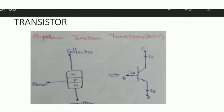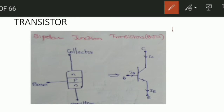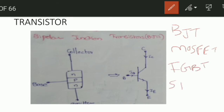Coming to power transistors, these are of four types. The first one is Bipolar Junction Transistors (BJT), the second one is Metal Oxide Semiconductor Field Effect Transistor (MOSFET), the third one is Insulated Gate Bipolar Transistor (IGBT), and the fourth one is Static Induction Transistors (SIT).